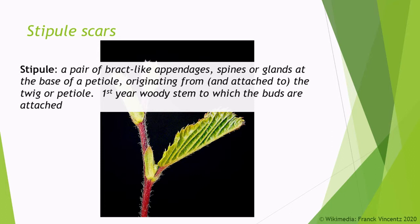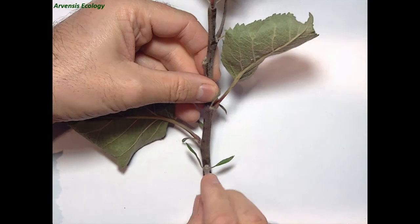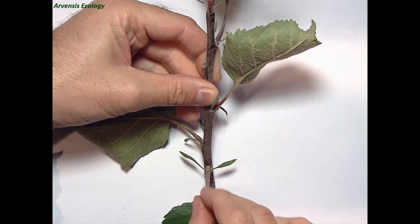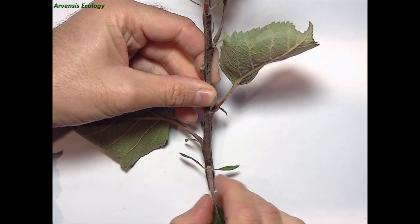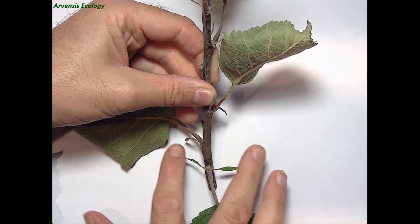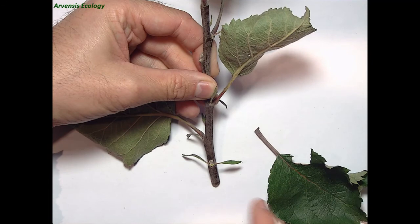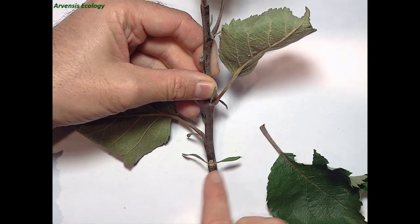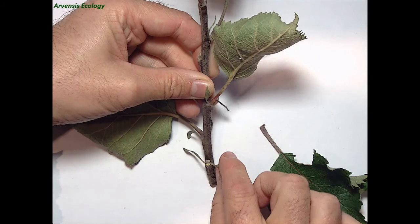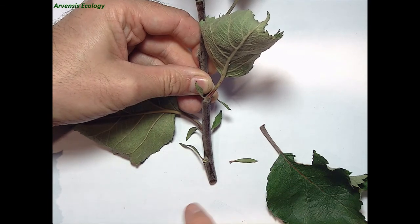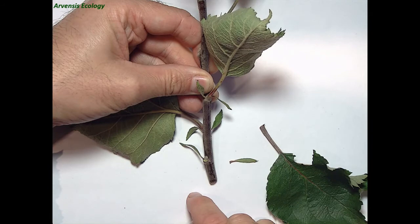Stipules, and in particular stipule scars, can be incredibly hard to spot on some species. On this particular species we've got quite flamboyant stipules either side of the leaf petiole. There's the petiole of the leaf with a little bud nestling at its base, and either side are the stipules. If we carefully remove the leaf, the petiole comes away leaving a scar, and there are still the two stipules attached. When these are removed they leave a minute scar, and it'll be this minute scar that you're looking for sometimes — they're not always very obvious features.